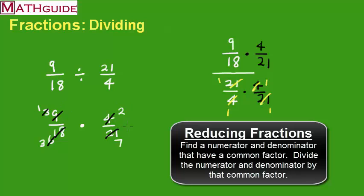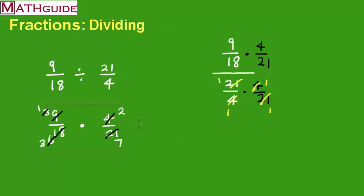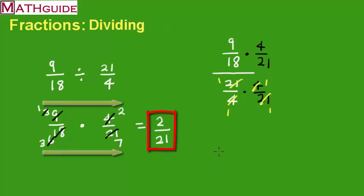All right, so now I scan the numerators and denominators to see are there any common factors. No, there are no more common factors. So what am I left with? I multiply across now. So multiply 1 times 2. And multiply 3 times 7. And there's the final answer. 2/21sts.